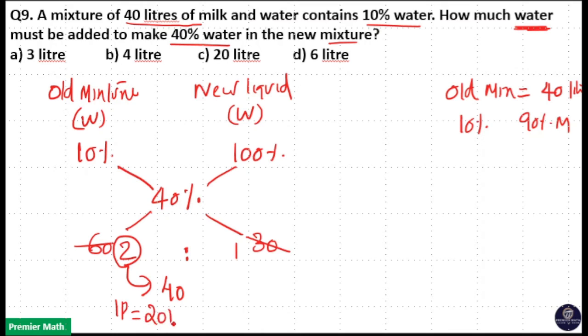That means 1 part is equal to 40 by 2, 20 liters. That means here new liquid added is 1 part, that will be equal to 20 liters.